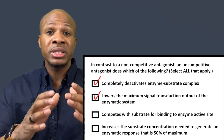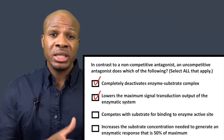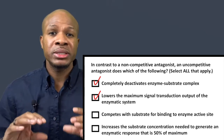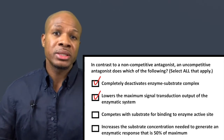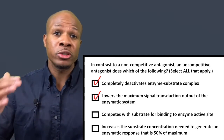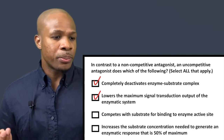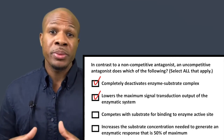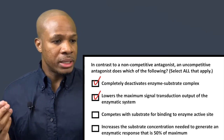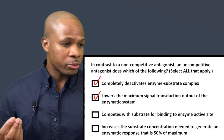Answer choice B says an uncompetitive antagonist lowers the maximum signal transduction output of the enzymatic system. Yes, because they completely deactivate enzyme-substrate complexes, meaning some enzymes cannot catalyze reactions, leaving only a few enzymes available — so the total output of the system is lowered. Answer choice B is correct. Answer choice C says an uncompetitive antagonist competes with the substrate for binding to the enzyme active site — that would be a competitive antagonist, not an uncompetitive one, so answer choice C is incorrect.